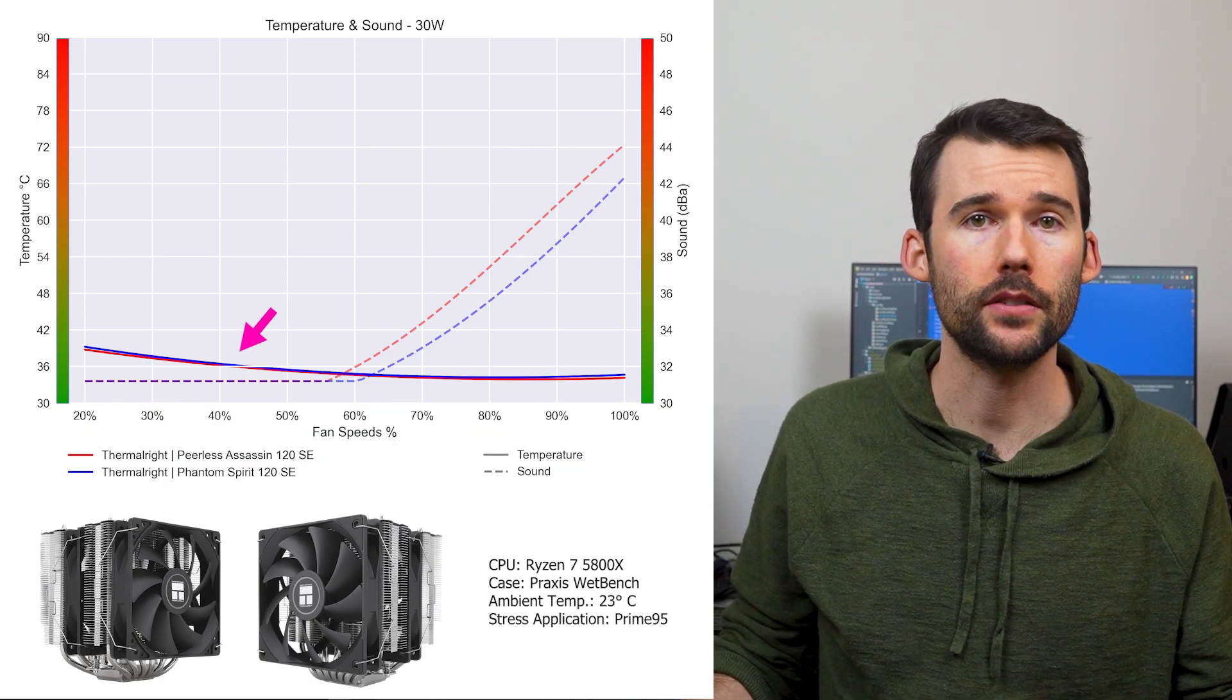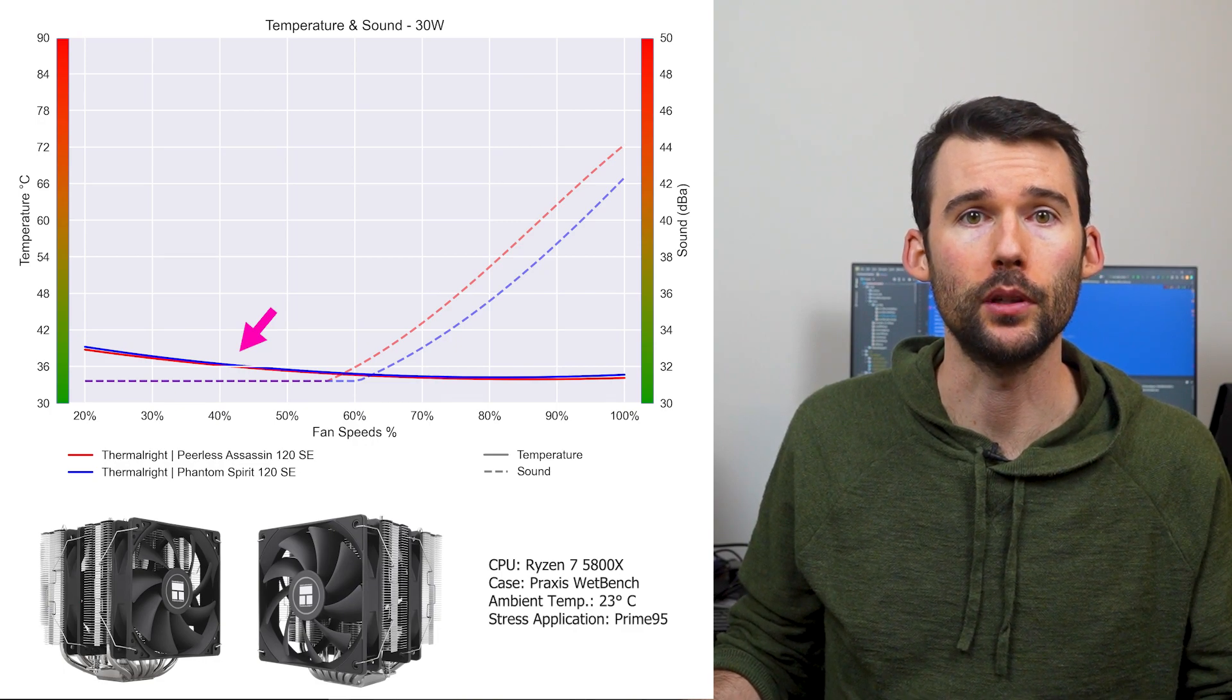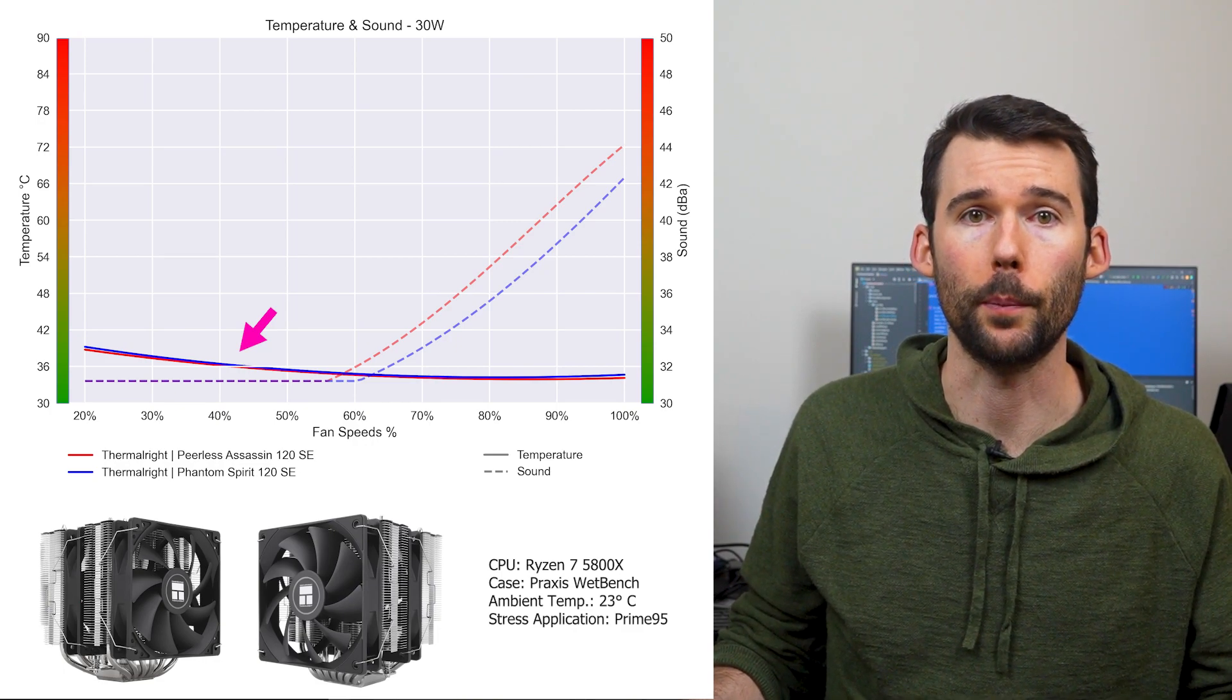At idle, the Peerless Assassin in red has similar performance as the Phantom Spirit in blue with comparable noise levels at lower RPMs.